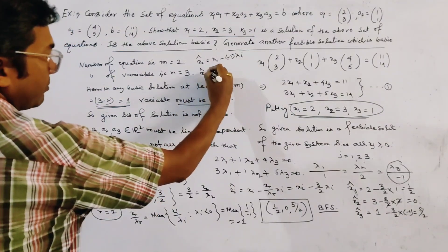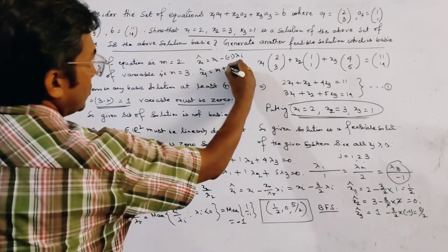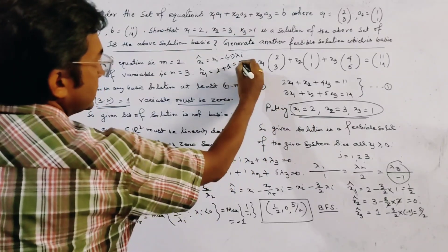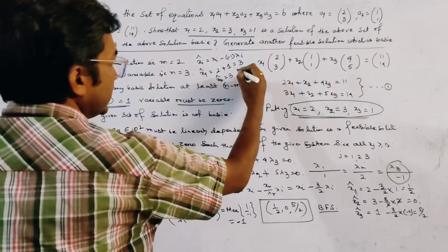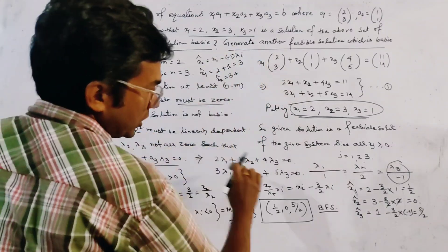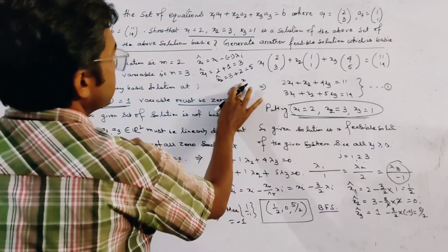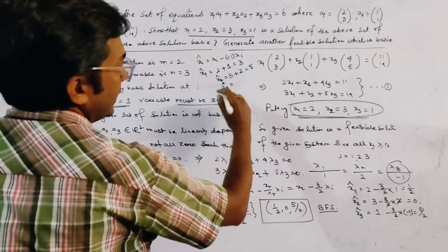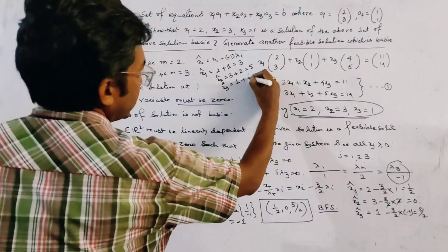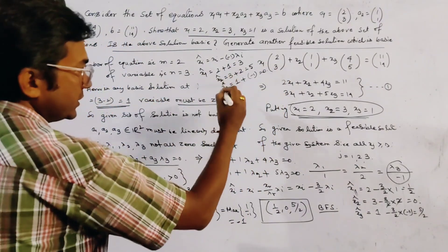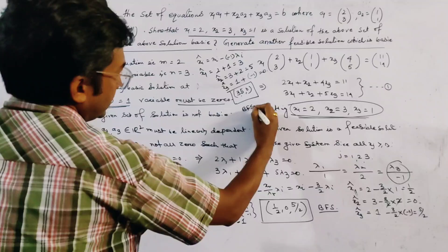Using this formula: x1_cap = x1 + lambda1 = 2 + 1 = 3; x2_cap = x2 + lambda2 = 3 + 2 = 5; x3_cap = x3 + lambda3 = 1 + (−1) = 0. In this case we get the solution (3, 5, 0), which is also a basic feasible solution of the system.